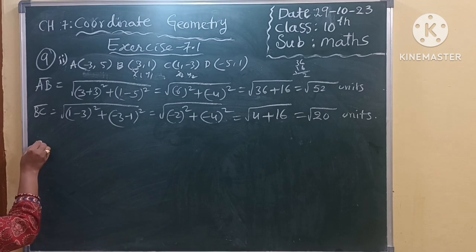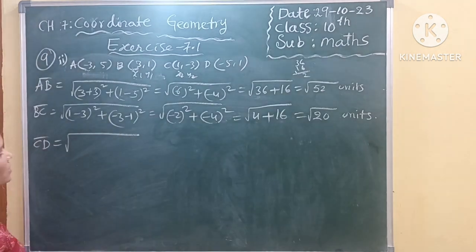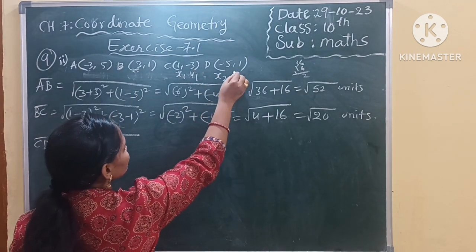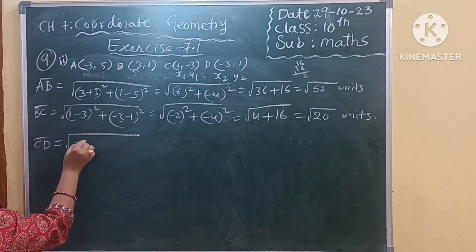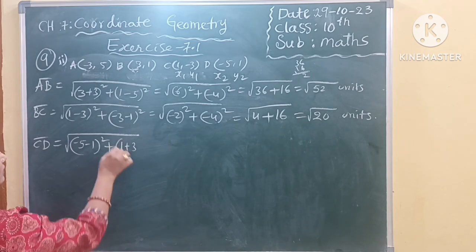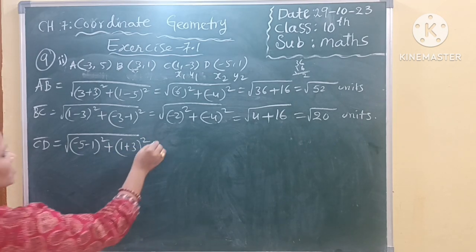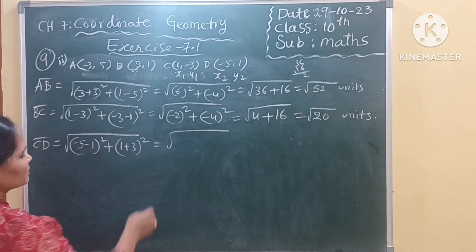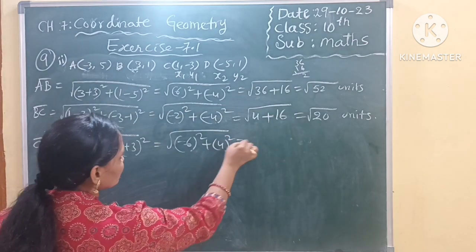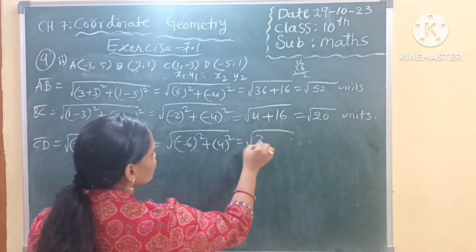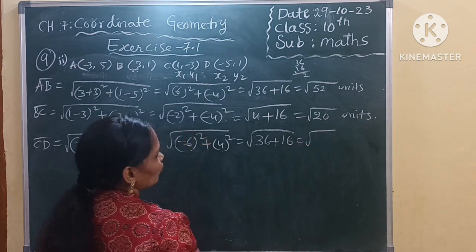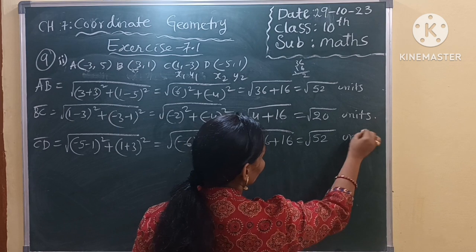Next CD distance also we should find. So when we are going to CD, C is X1 Y1, D is X2 Y2. So X2 minus X1 whole square plus Y2 minus Y1 whole square. So here minus 1 minus 1 whole square, minus 3 minus 1, 4 whole square. Square root of 36 plus 16, square root of 52 units.